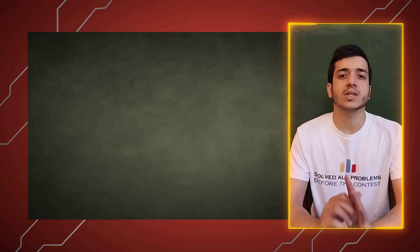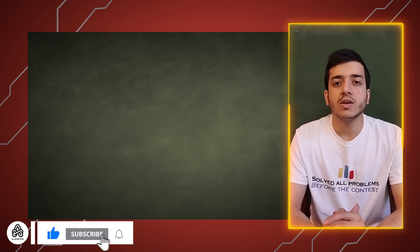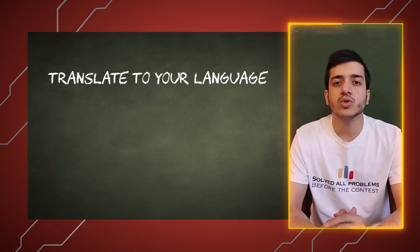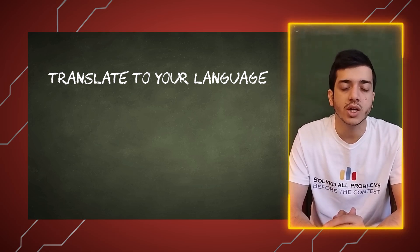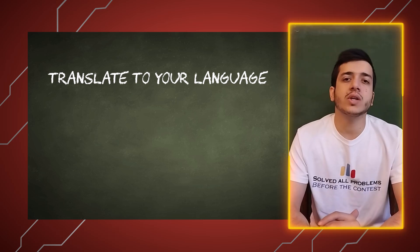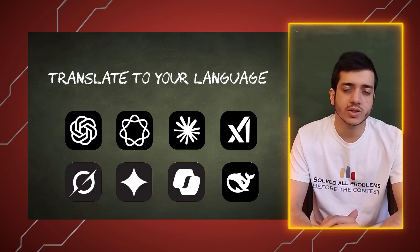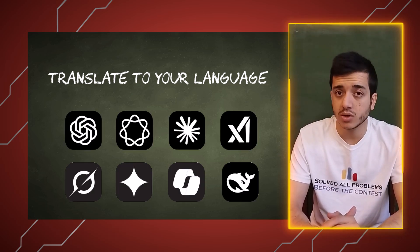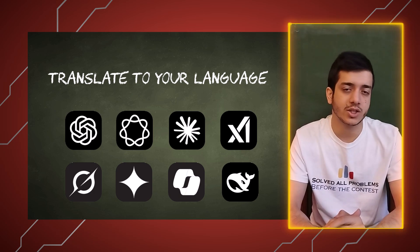And working together doesn't stop there. We want this book to be easy to find and read for every competitive programmer around the world. So if you know some other language, we encourage you to translate this book to your own language. And this way you will help other people from your country to read this book. You can even use AI models to translate, but it needs to be good. We will check carefully all translations.